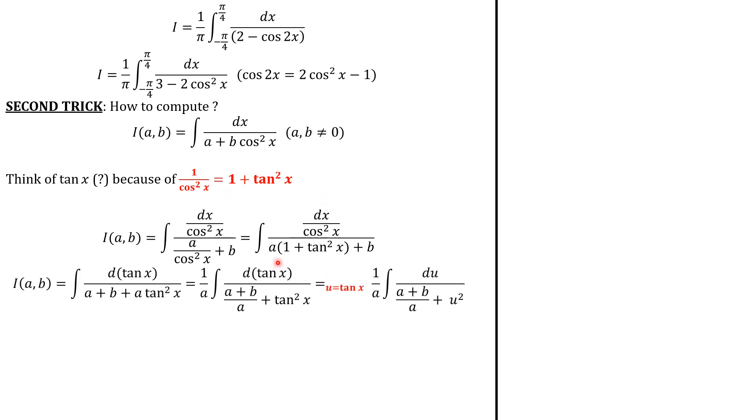And again, at the denominator, we're going to have this sum. But we know that this is d of tangent x. Next, we use some multiplicative constants to adjust the expression here. And we set the substitution u equals tangent of x to have this.